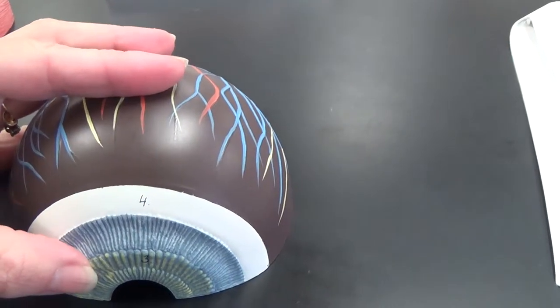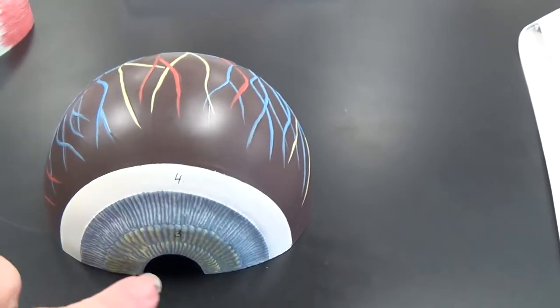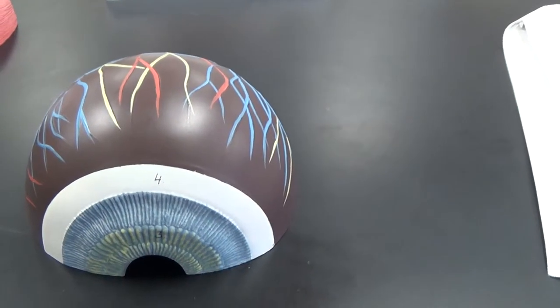This blue area here is the iris, which we know can change color from human to human. And then this hole that looks black is the pupil.